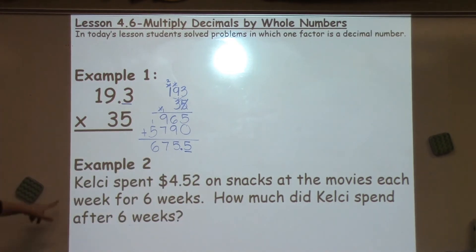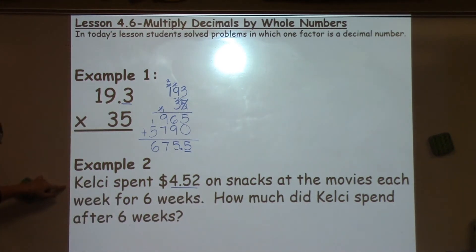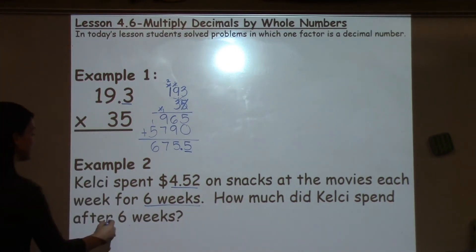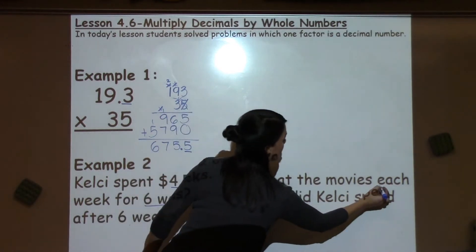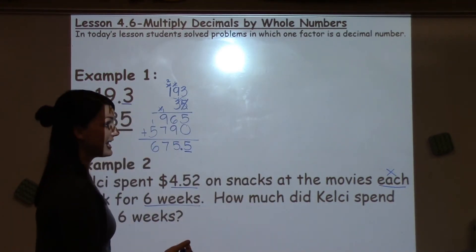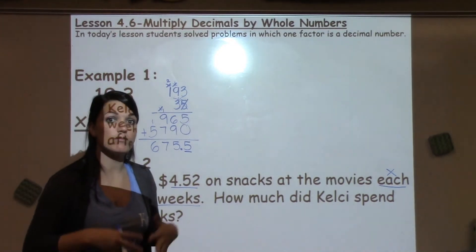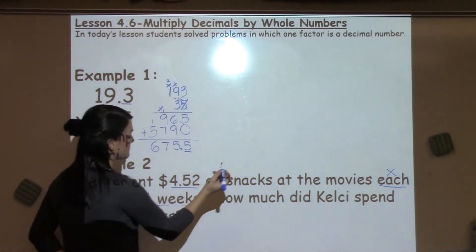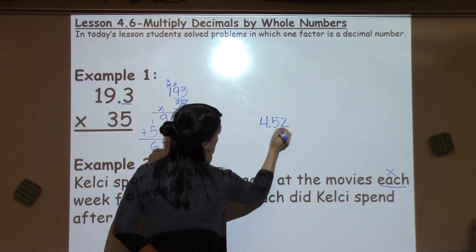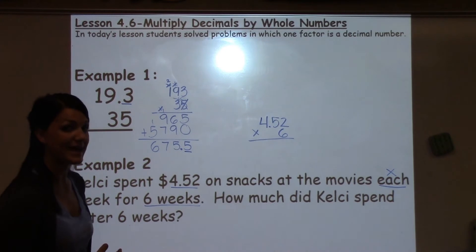Let's look at another example. This one says Kelsey spent $4.52 on snacks at the movie each week for 6 weeks. So how much did Kelsey spend after those 6 weeks? The word 'each' is a big multiplication keyword — each means 1. So every 1 week she spent this much, but I want to know how much after 6 weeks, so I'll need to multiply. I'm going to set up my problem: $4.52 times 6.